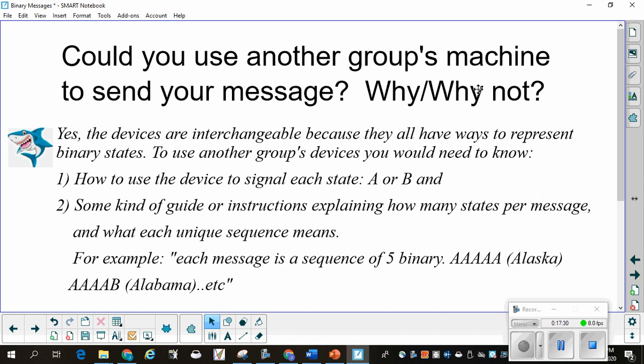To use another group's devices, you would need to know how to use the device to signal each state, A or B, on or off. You would need some kind of a guide or instructions explaining how many states per message and what each unique sequence means. For example, each message is a sequence of five binary, A, A, A, A, A equals Alaska, A, A, A, A, B equals Alabama, etc.